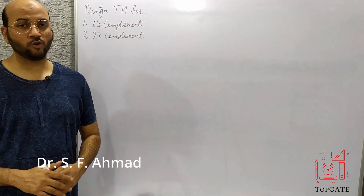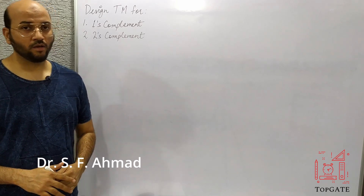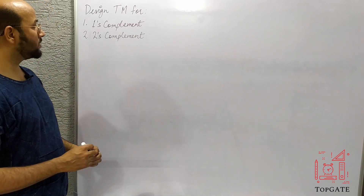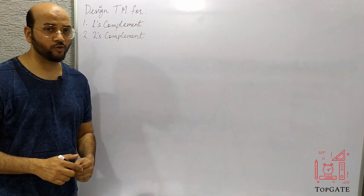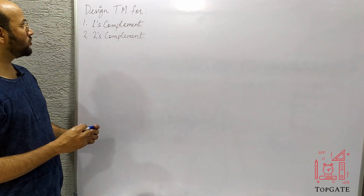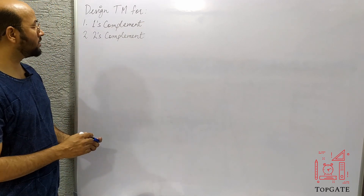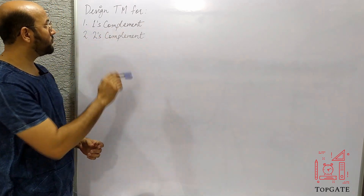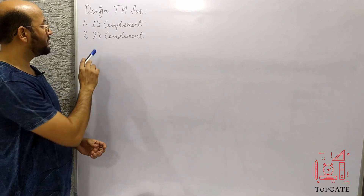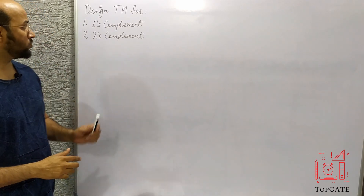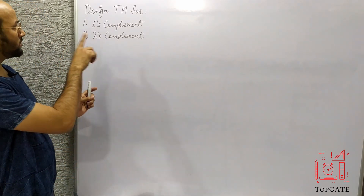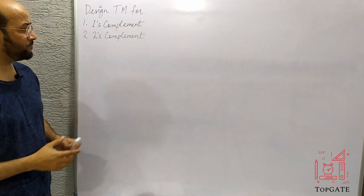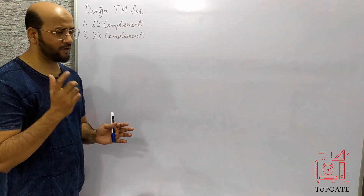Hello students, welcome to the channel Top Gate. In this video I will discuss one more problem for Turing machine — to design a Turing machine for finding the ones complement of a number and the twos complement of a number. I'll discuss both Turing machines in this video.